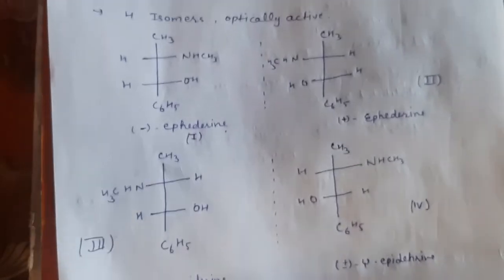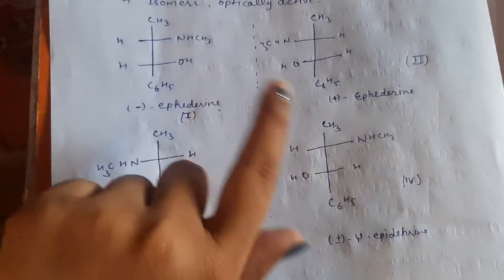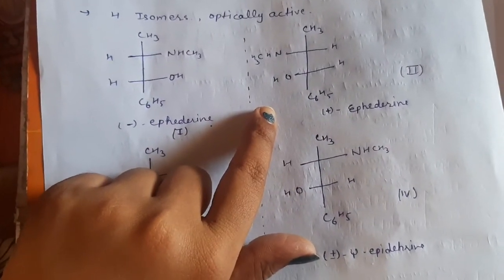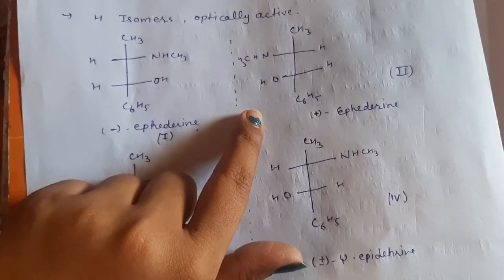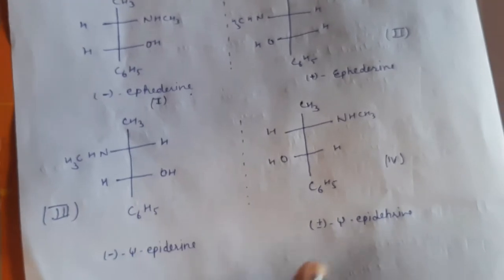Now if we talk about their relationship then first and second are non-superimposable mirror image of each other and hence they are enantiomers of each other. Now similarly third and fourth are non-superimposable mirror image of each other.